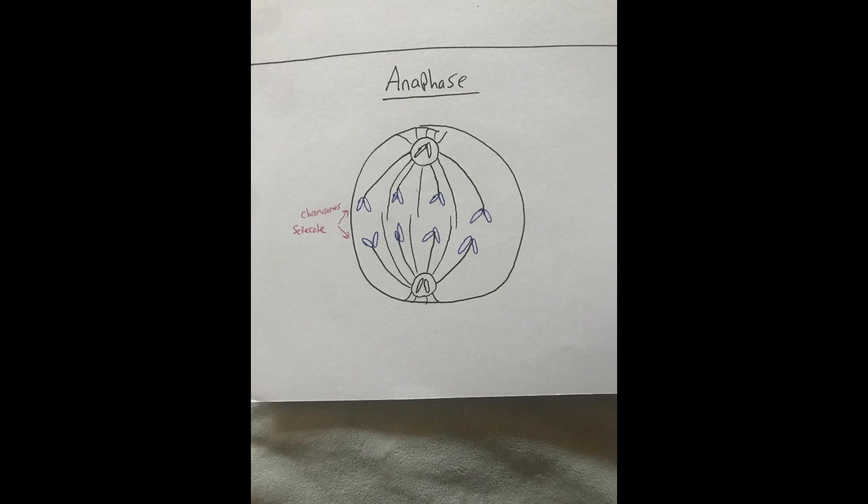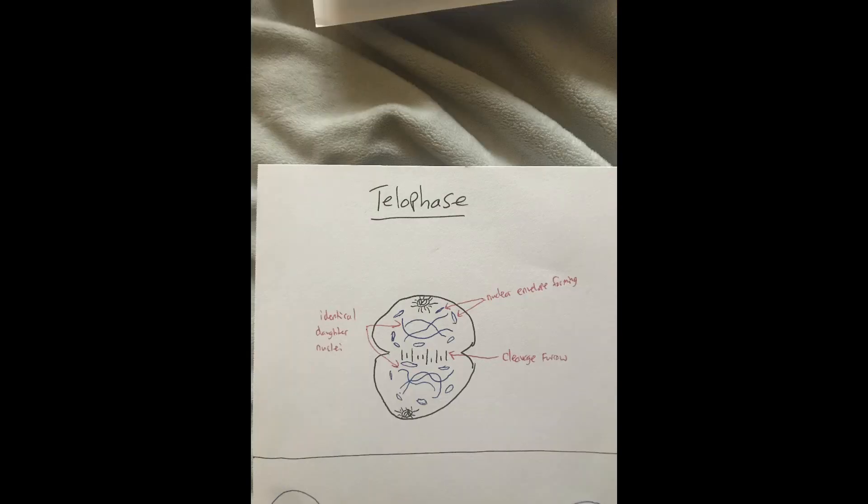Following metaphase comes anaphase, where the chromosomes along the metaphase plate split apart, separating the sister chromatids. Cell elongation also starts to occur, preparing to split.